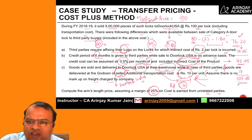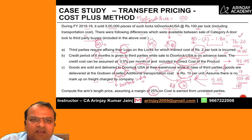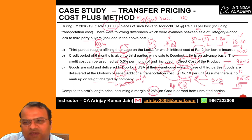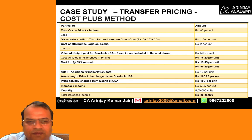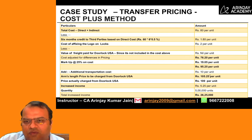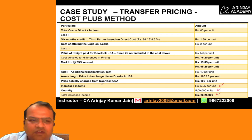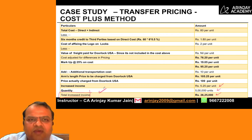The arm's length price is 105.05, but the price actually charged was 100. The difference is 5.05 per unit. Units sold were 5 lakh. So 5 lakh multiplied by 5.05 gives an adjustment of 26,25,000. Therefore, the total transfer pricing adjustment to be made will be 26,25,000.